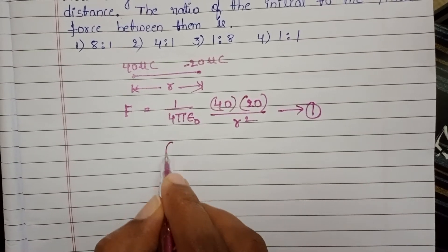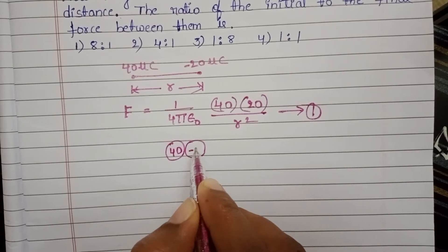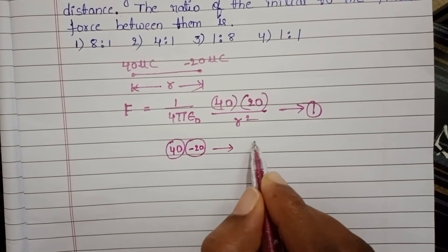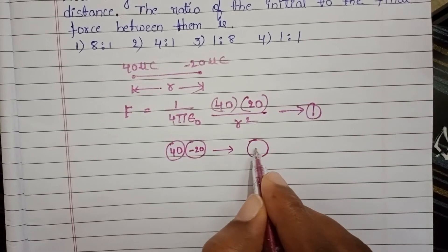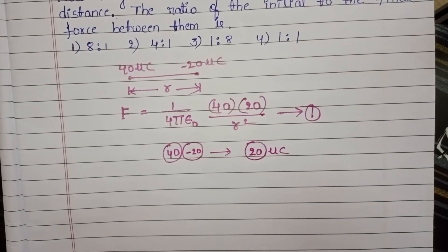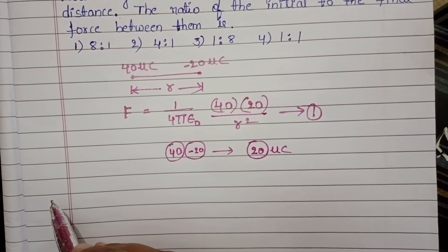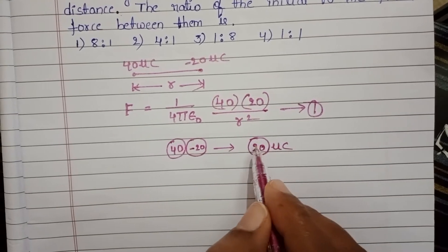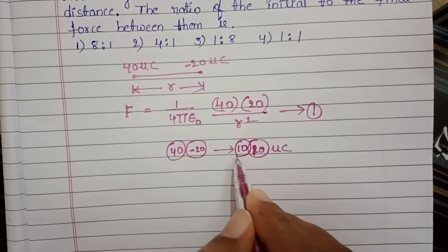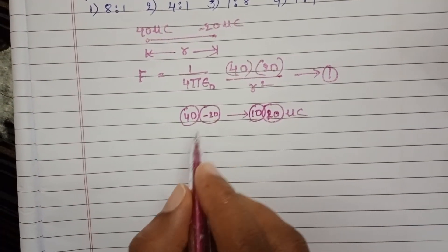When the two charges are touched, one is positive and one is negative, so the resultant charge becomes 20 microcoulombs. This is then distributed equally, giving 10 microcoulombs on each body.